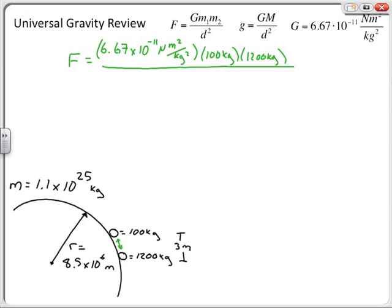Then I divide by the distance of separation between the objects. Remember that distance is measured center of mass to center of mass, so I'm using three meters. Looking at the units, the square meters in the denominator cancel with those in the constant, and the kilograms squared in the denominator cancel with the two kilogram masses in the numerator, leaving only newtons. Plugging in the numbers, I find that the force is equal to 8.89 times 10 to the minus 7 newtons.